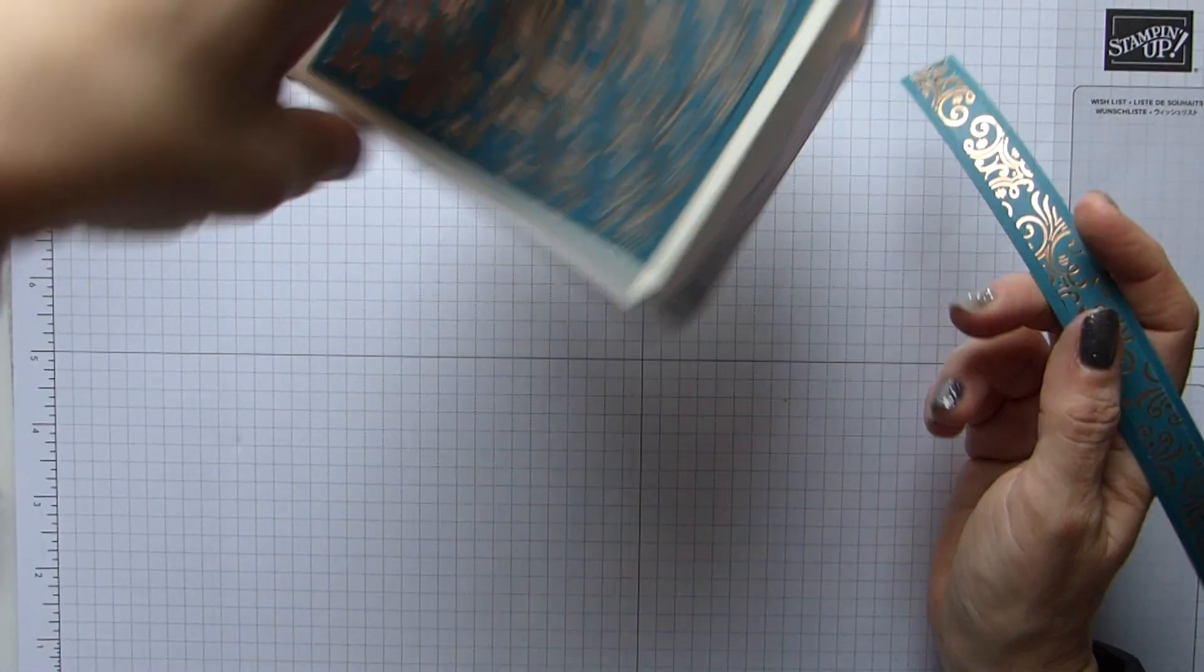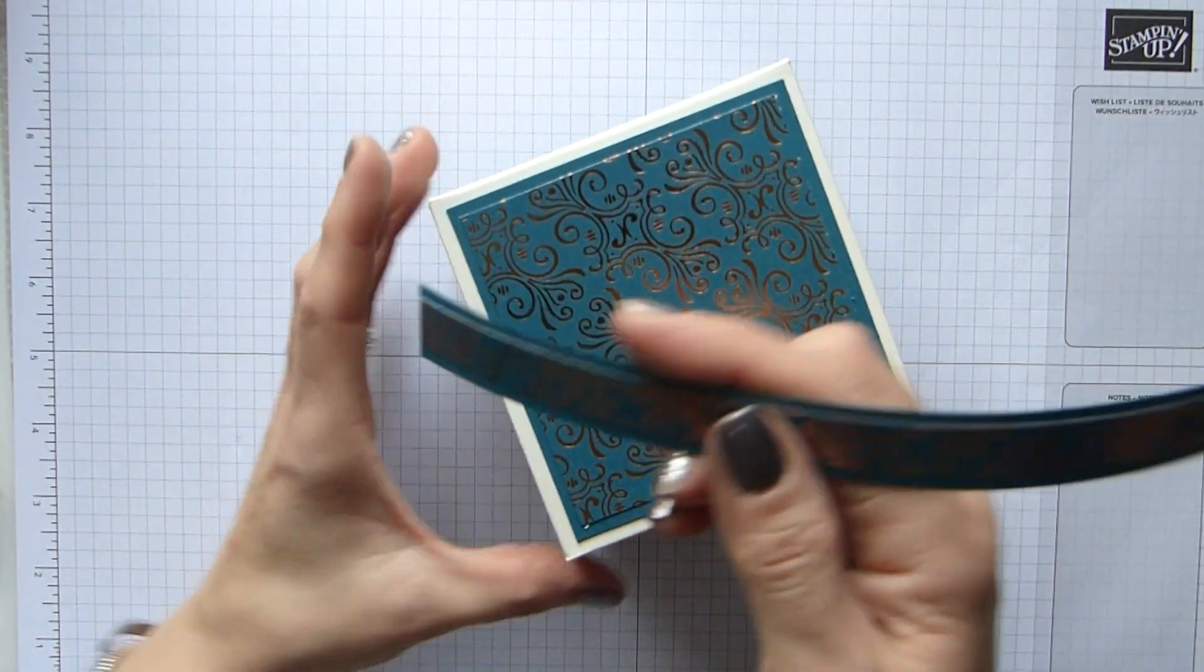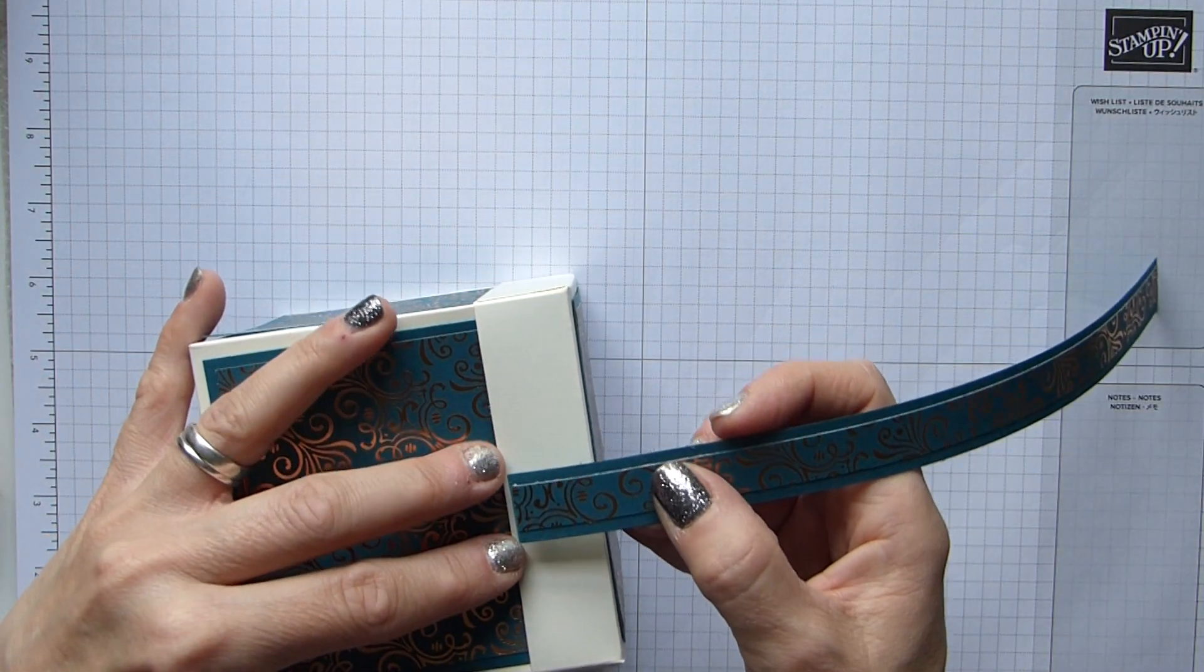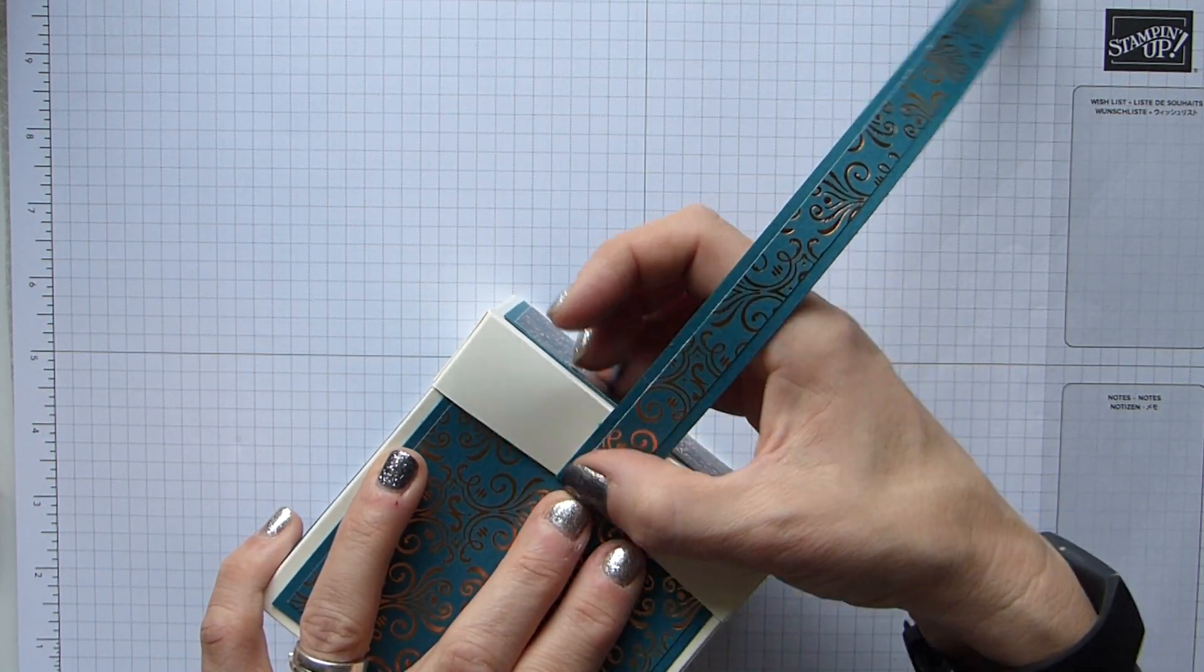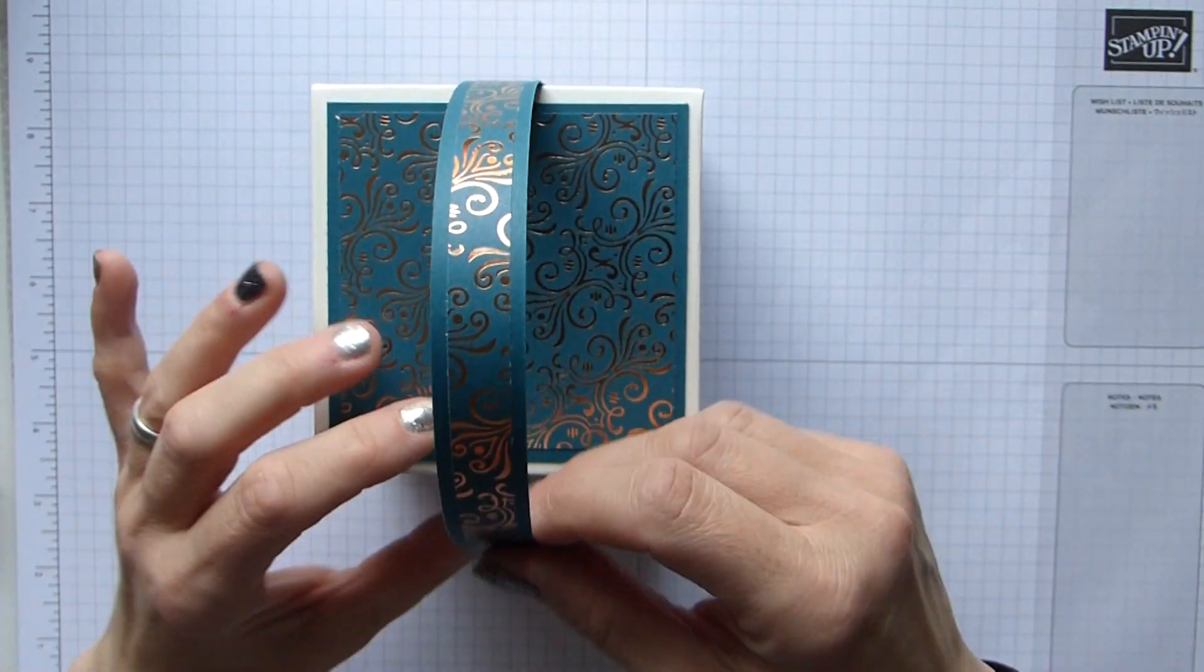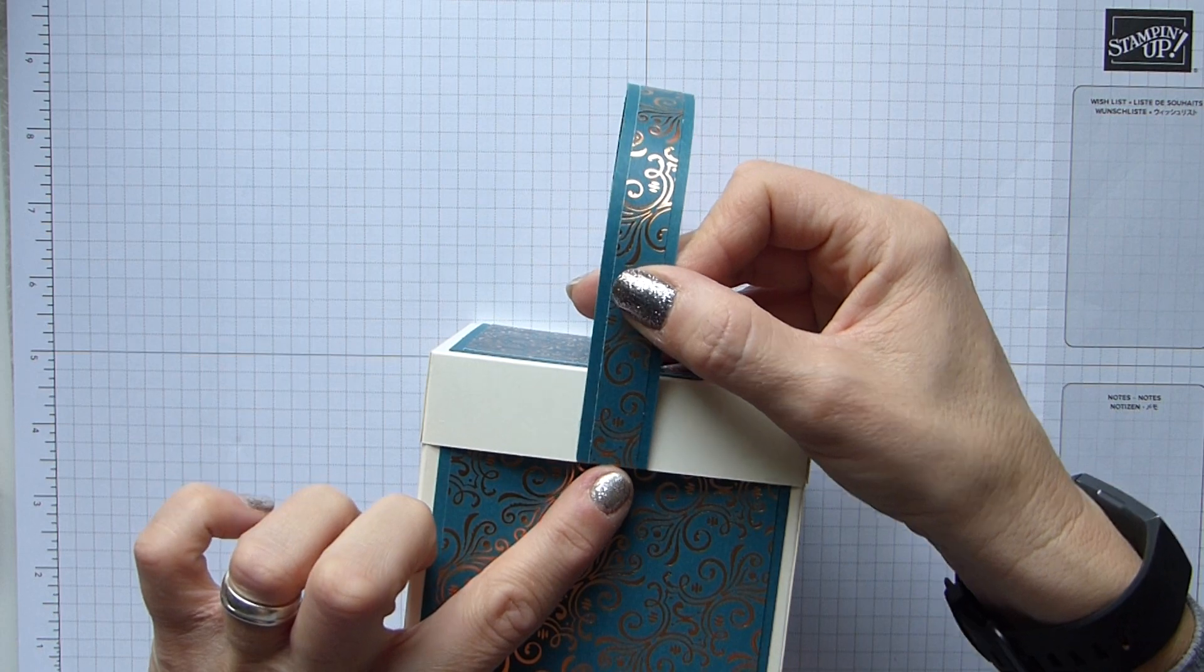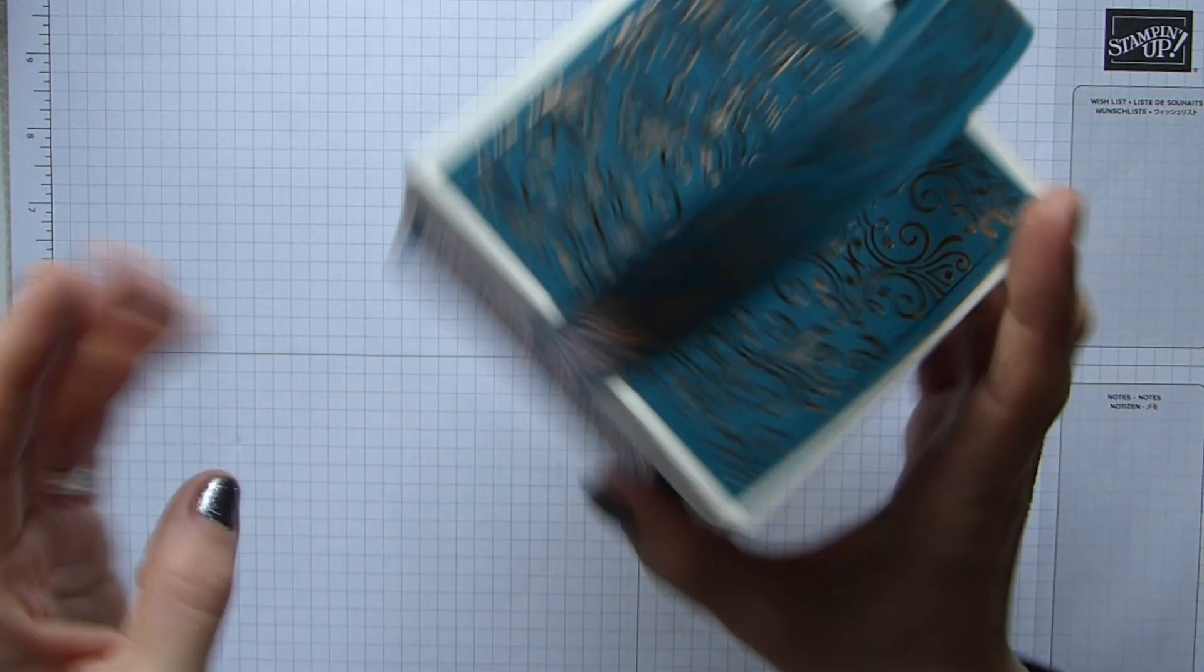And then another bit above it, just because it needs that thickness. And then I'll do exactly the same on the other end. That's there, and then another one just above it. I'm going to put it in here and then take the backing off.